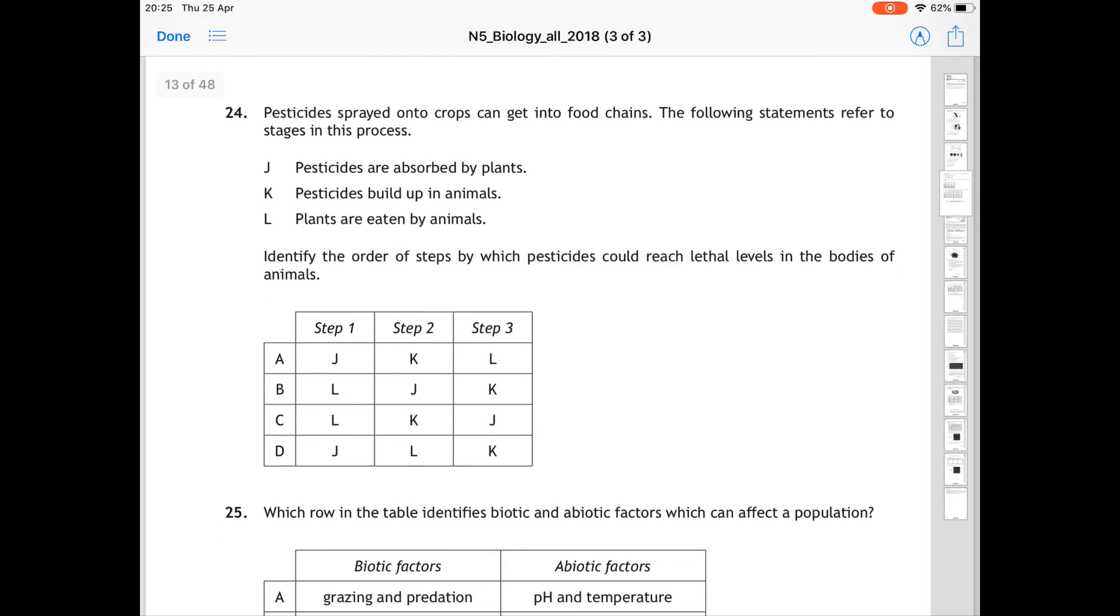Question 24 is looking at the build-up of pesticides and the problems of pesticide use. And it says stage J is pesticides are absorbed by plants. Stage K are pesticides are built up in animals. And stage L, plants are eaten by animals. Identify the order of steps by which pesticides could reach lethal levels in the bodies of animals. So looking at the stages of bioaccumulation. The correct answer for 24 is D, because it starts off with J, that pesticides are absorbed by the plants after it's been sprayed on them. In step 2, those plants are eaten by animals. And stage K, pesticides are built up in animals. Because if those animals keep eating plants which have absorbed pesticides, then the pesticides will go build up in animals and could reach lethal doses.